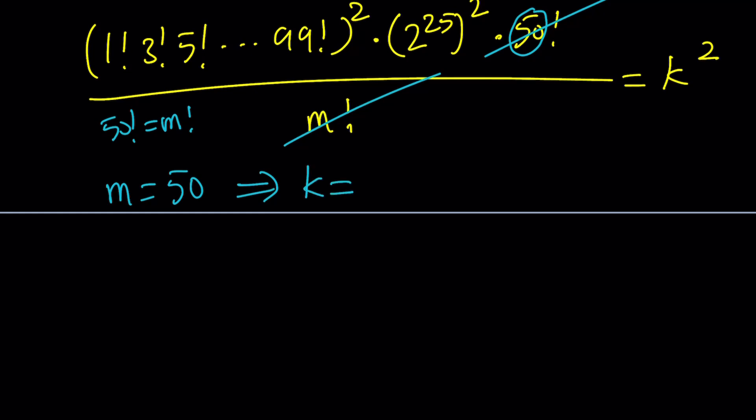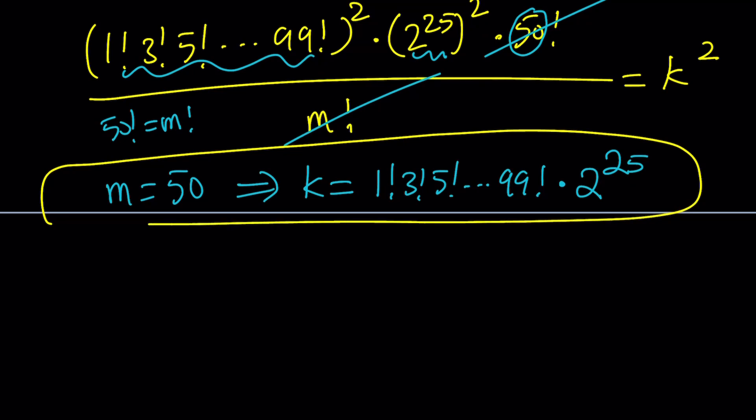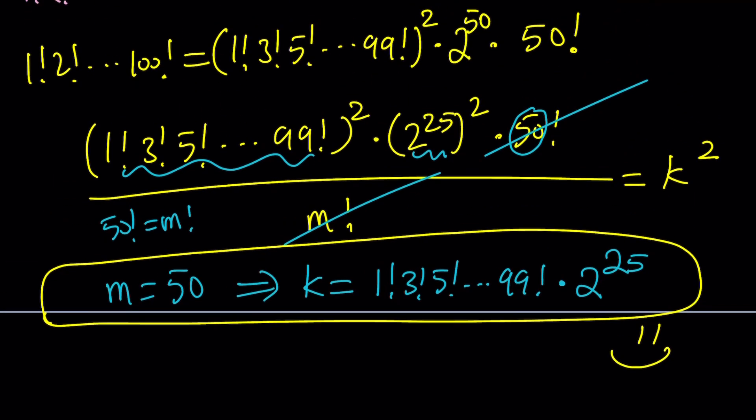What do you think is the k value? k is just going to be the inside, in other words, the square root of what's left, which is 1 factorial times 3 factorial times 5 factorial all the way up to 99 factorial, multiplied by 2 to the power of 25. Do you like that? And this brings us to the end of this video. Thank you for watching. I hope you enjoyed it. Please let me know. Don't forget to comment, like, and subscribe. I'll see you next time in another video. Until then, be safe. Take care, and bye-bye.